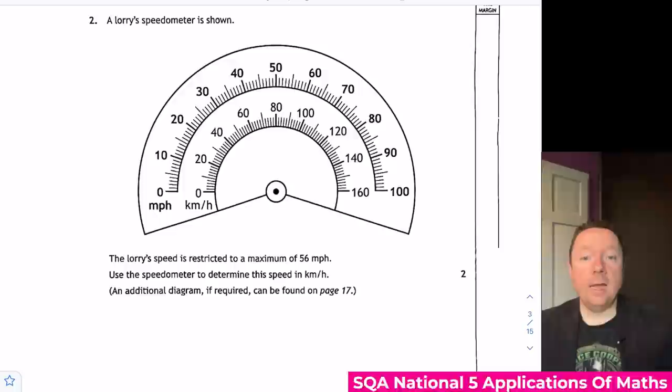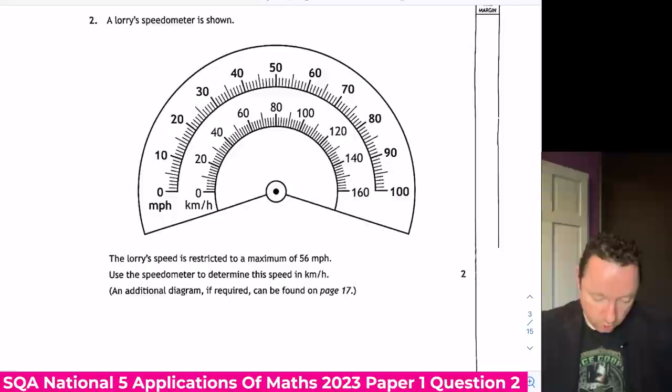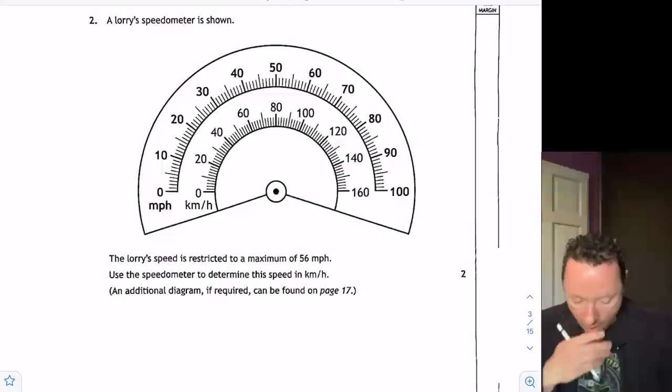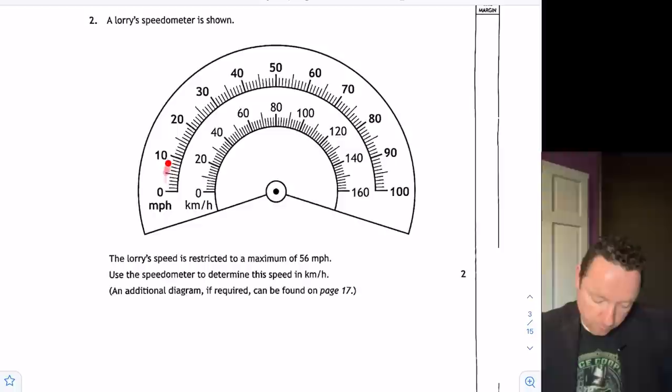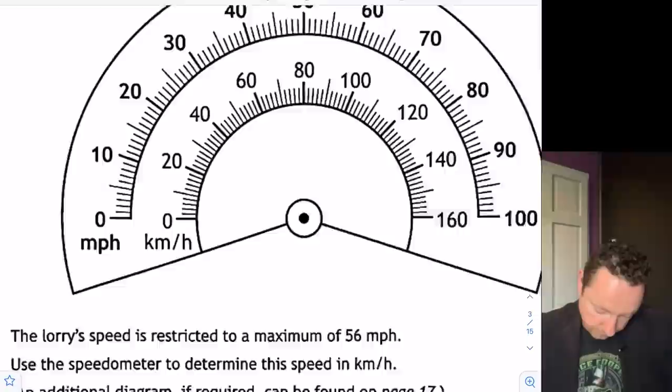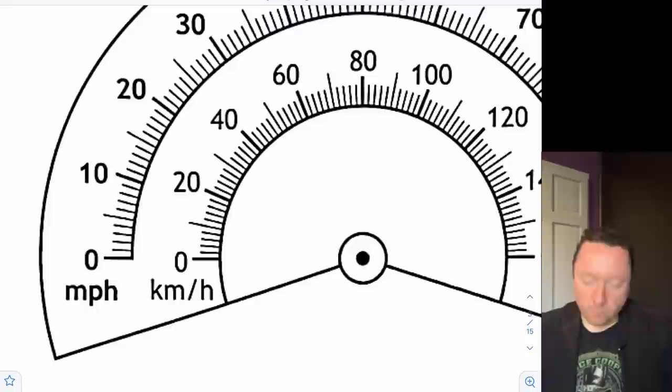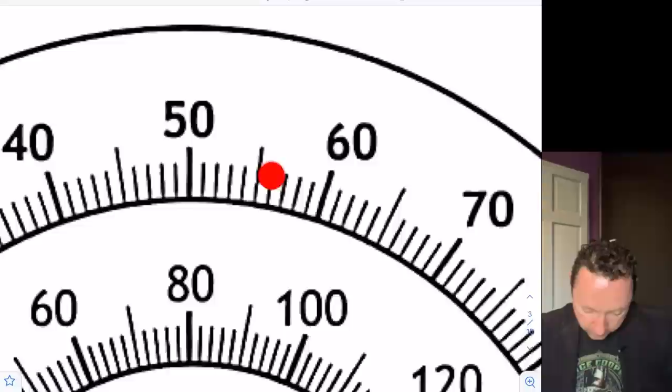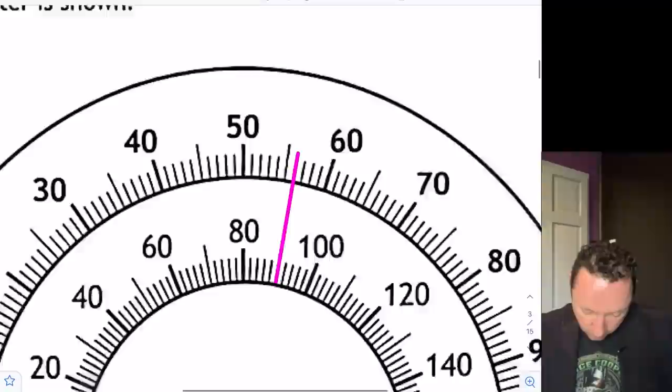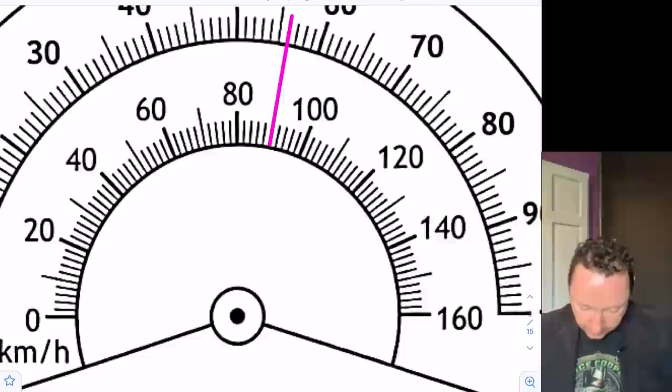National 5 Applications of Maths 2023 paper 1 question 2. A lorry speedometer is shown. The lorry is restricted to a maximum of 56 miles per hour. Use the speedometer to calculate this speed in kilometers per hour. Miles per hour is on the outside, kilometers per hour is on the inside. So I need to find 56. Always check if it's going up in 1s or not. It goes up in 1s on here. But on the inside it goes 0 then 20 and there's only 10 in between. So it's actually gone up in 2s. Let's try and find 56. So we'll zoom this right in. Miles per hour 55, 56. Taking that straight across. It's going to be right there. Remember this has gone up in 2s. So it's 82, 84, 86, 88, 90. We get 90 kilometers per hour.